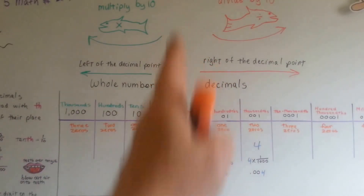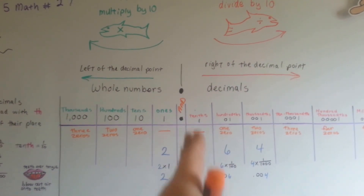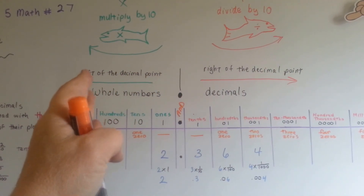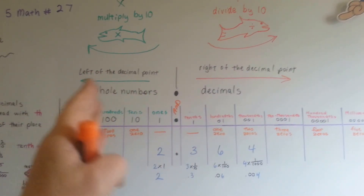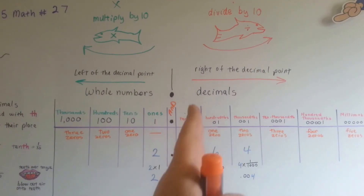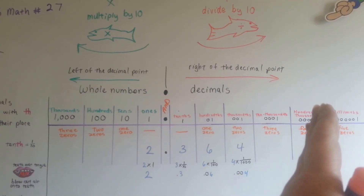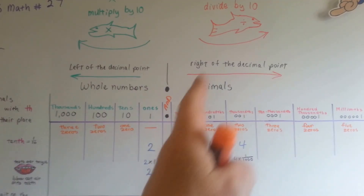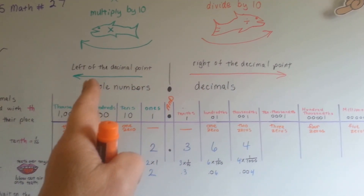If you take a look at the place value chart, you can see how it's split right down the middle with the decimal point. Anything to the left in the green increases the place value — we multiply by ten. And anything going towards the red, we divide by ten and it'll decrease the value. Decrease: divide by ten. Increase: multiply by ten.